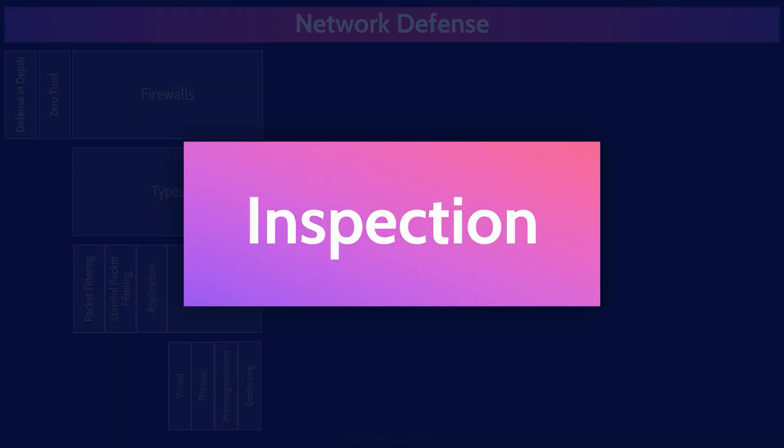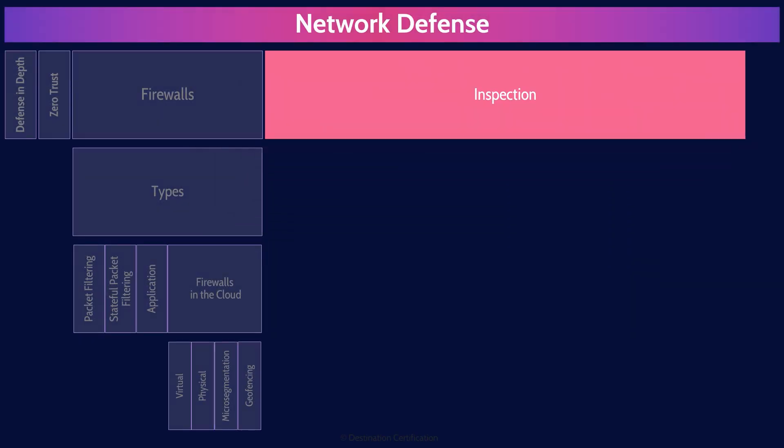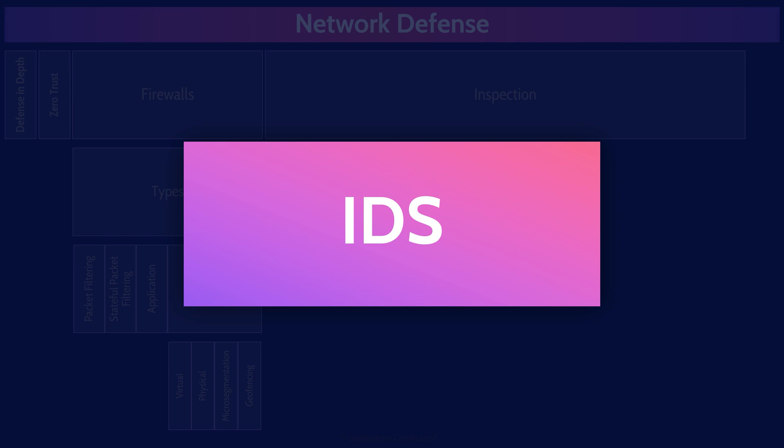Moving on from firewalls and concepts like geofencing, we'll now talk about the major network monitoring tools: IDSs and IPSs. IDS — intrusion detection systems — are designed to inspect network traffic packets to detect potentially suspicious activity, and if an IDS detects something suspicious, it will raise an alarm. IPSs — intrusion prevention systems — do exactly the same thing as an IDS, but go one very important step further: if they detect something suspicious, they can potentially block the suspicious traffic, hence preventing an attack from occurring. IDSs can work in combination with, say, a firewall to block traffic, but IPSs can detect and block traffic on their own.